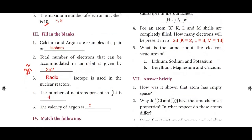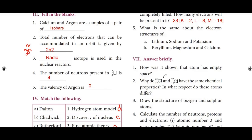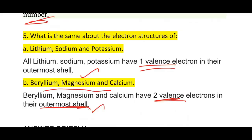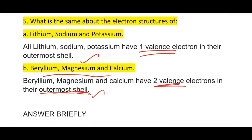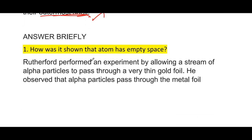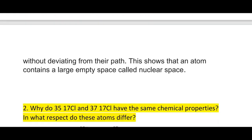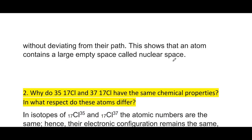Section 7: Answer briefly. First: How was it shown that the atom has empty space? Rutherford performed an experiment by allowing a stream of alpha particles to pass through a very thin gold foil. He observed that alpha particles passed through the metal foil without deviating from their path, showing that an atom contains a large empty space called nuclear space.